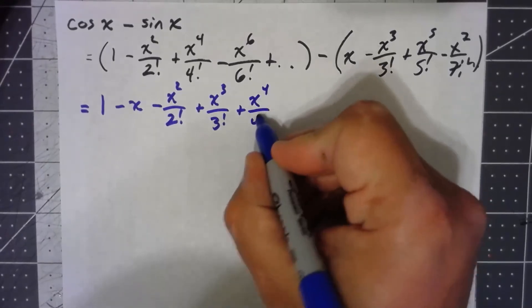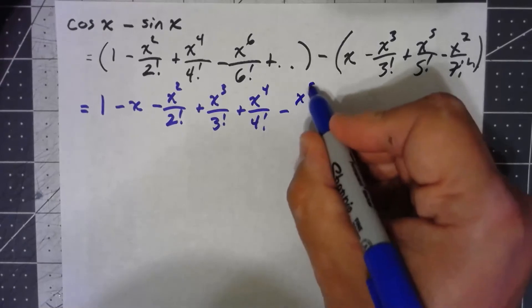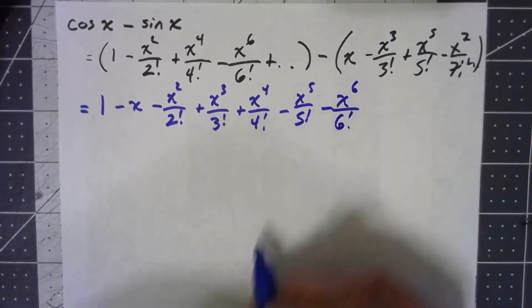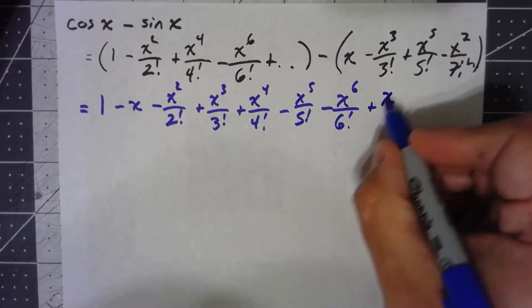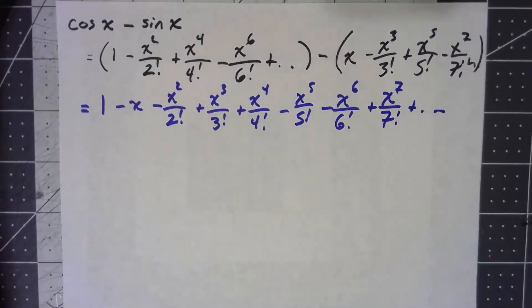minus an x to the 5th over 5 factorial minus an x to the 6th over 6 factorial. I'll get a plus x to the 7th over 7 factorial and so on like that.